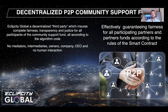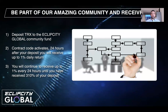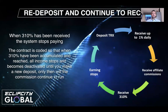Be a part of our amazing community and receive up to 310%. It's very simple — three steps: one, you deposit Tron to the Eclipse City Global community fund; two, the pre-written contract code will activate and 24 hours after your deposit you will receive up to 1% daily return; three, you will continue to receive that daily return every single day until you have received 310% of your deposit.